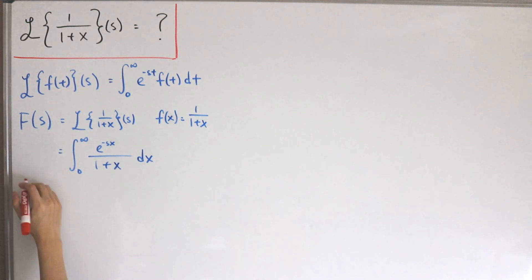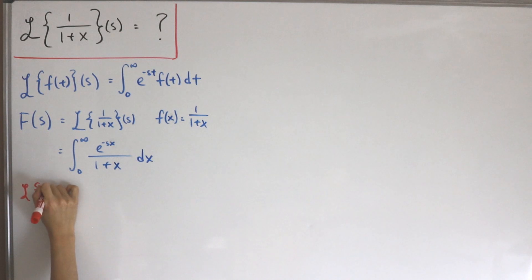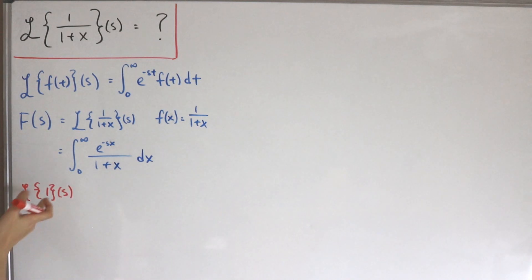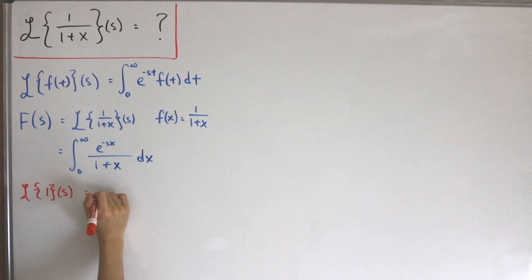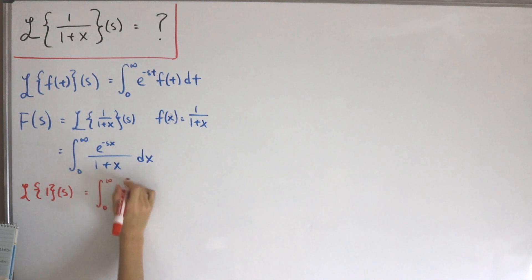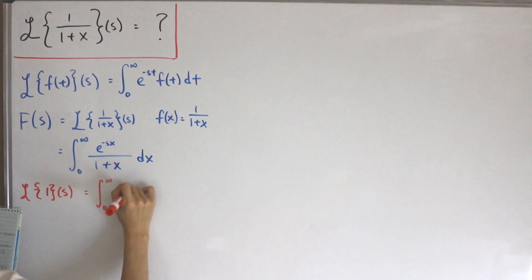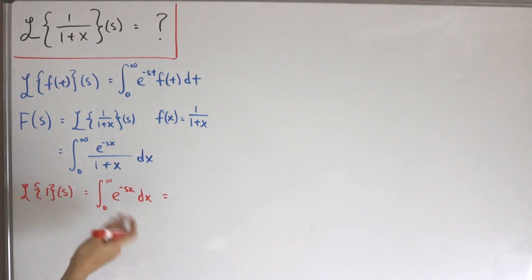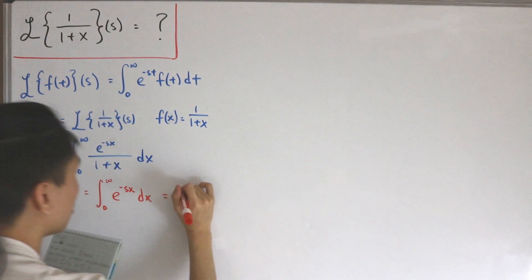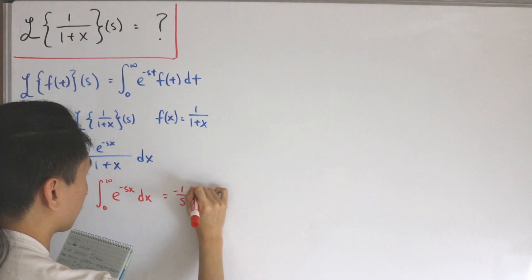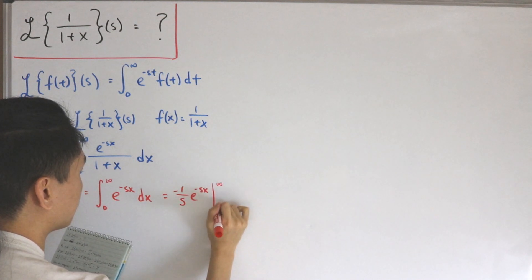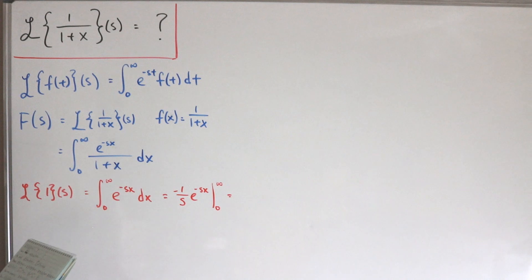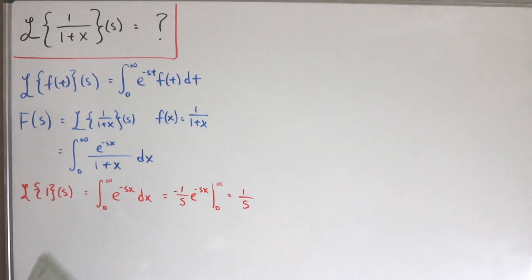First, let's take the Laplace transform of the number one with respect to s — this is a basic Laplace transform found in the tables. That's the same as the improper integral from zero to infinity of e to the negative s times x, then dx. Using u-substitution and plugging in the bounds, we get negative one over s times e to the negative s x, evaluated from zero to infinity, which gives us simply one over s.